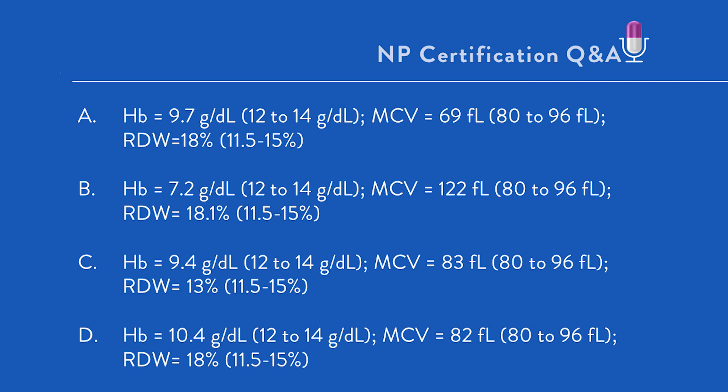Option D: hemoglobin 10.4, MCV 82, so that's normocytic, normocytic would mean normochromic, and RDW 18%. The correct answer here is C.